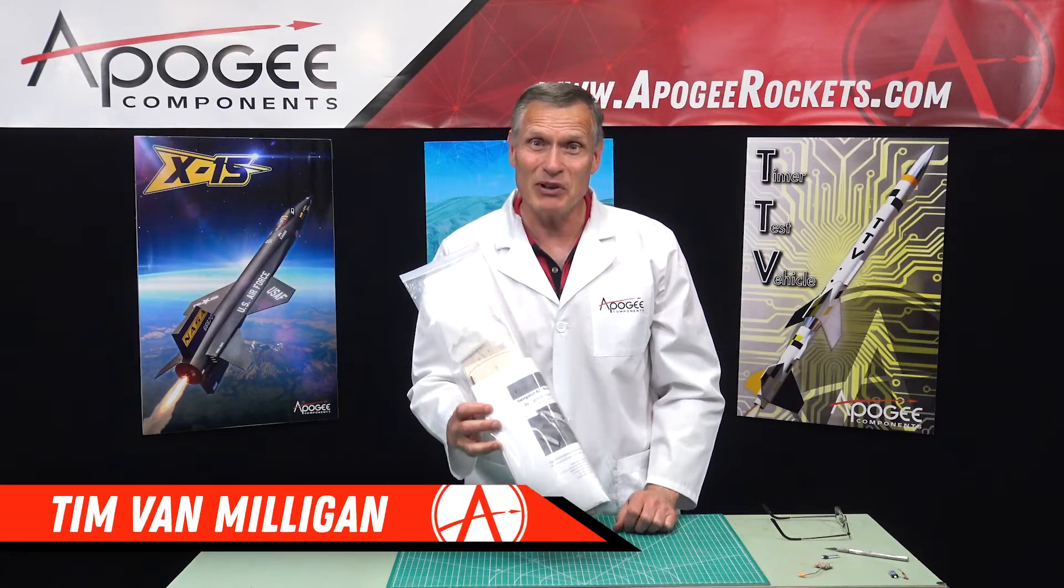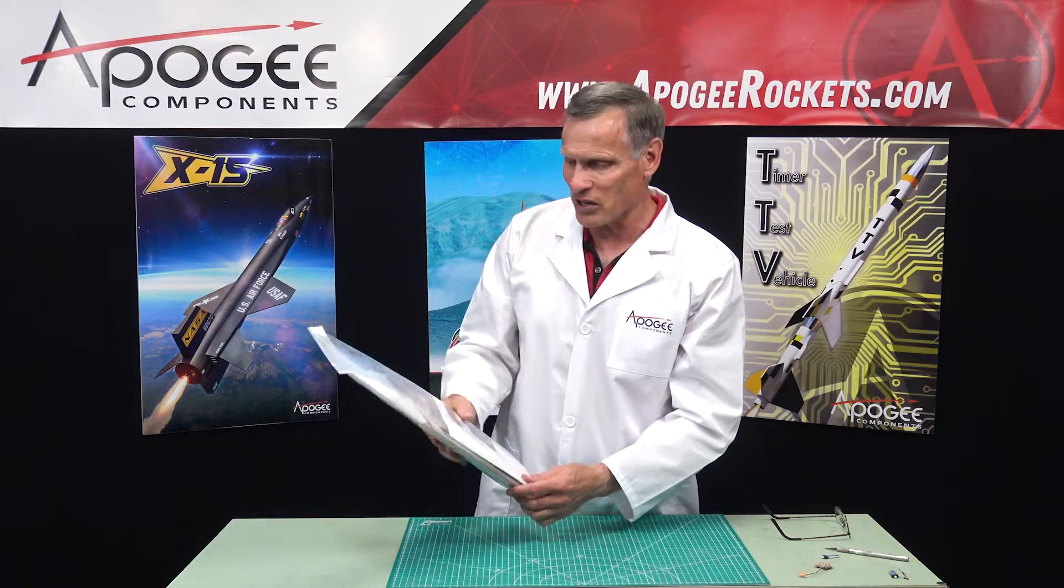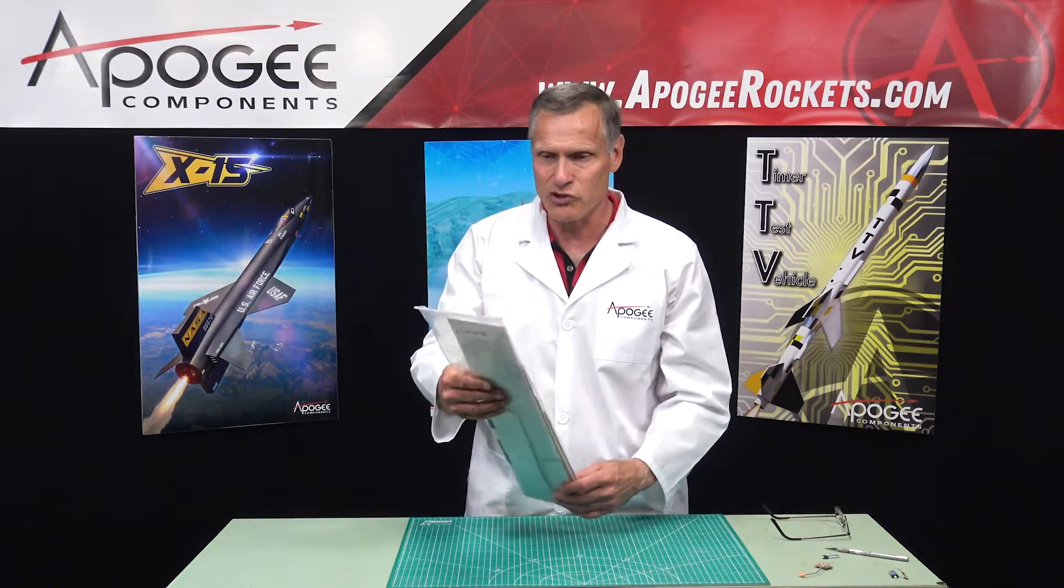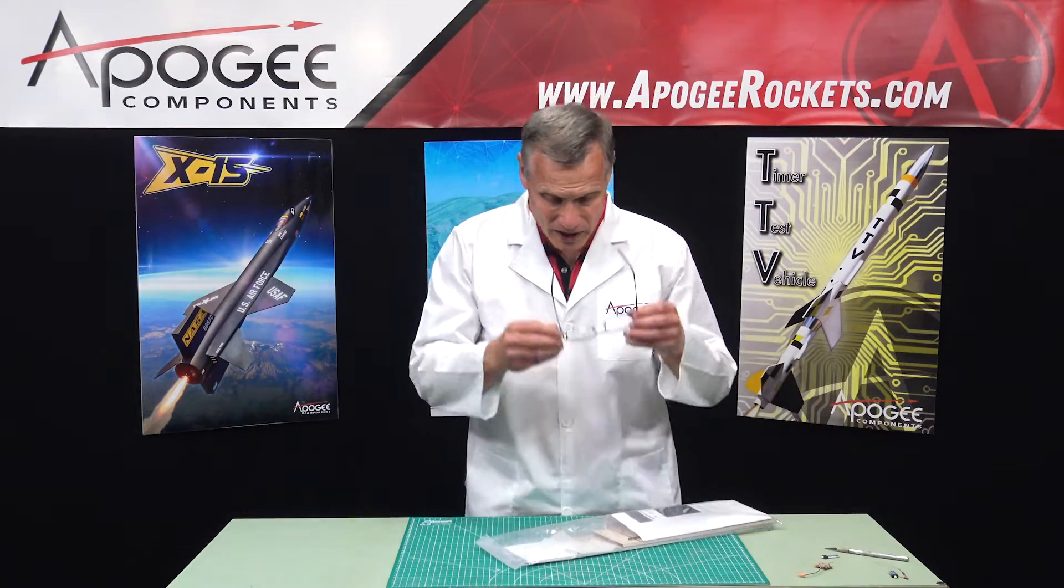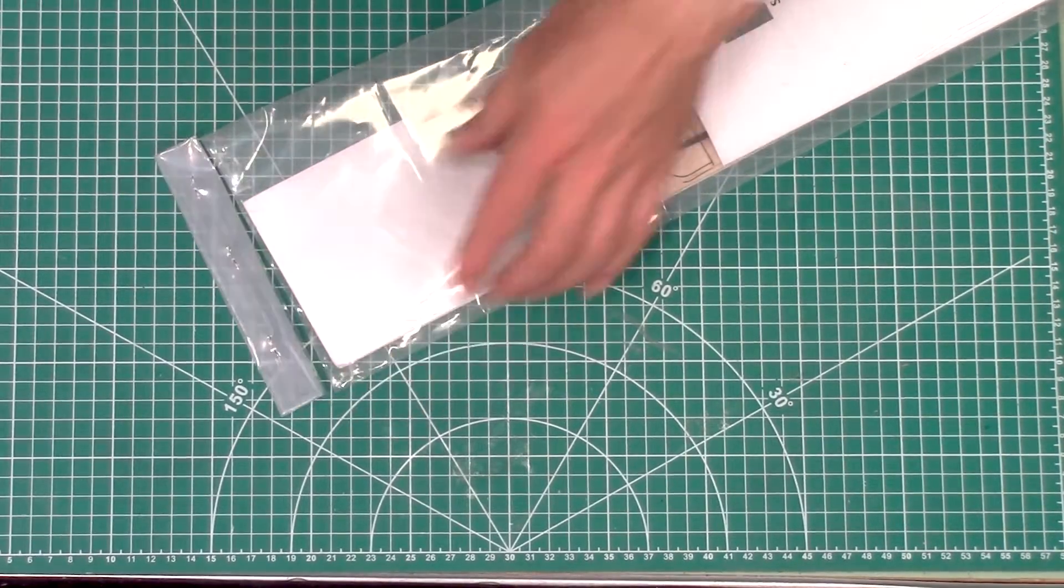Hi, I'm Tim Van Milligan, and yes, I am a real rocket scientist. Today we're going to unbox a rocket called the Swingshot RC Rocket Glider from J&H Aerospace, and this is the first time that I'm looking at it. So we're looking at this together, and let's open it up and see what's inside.